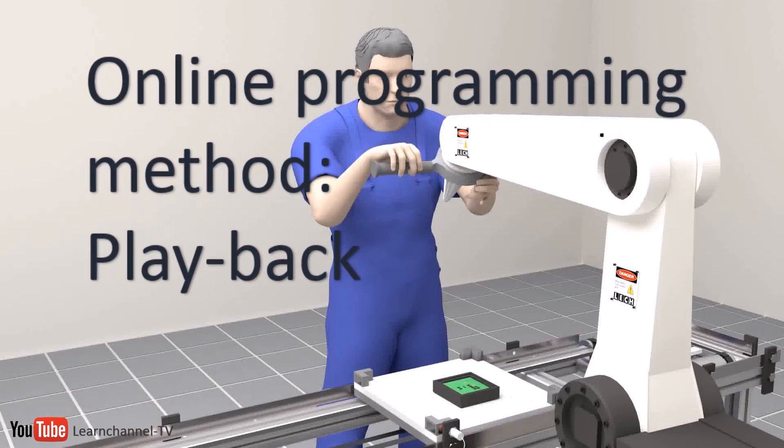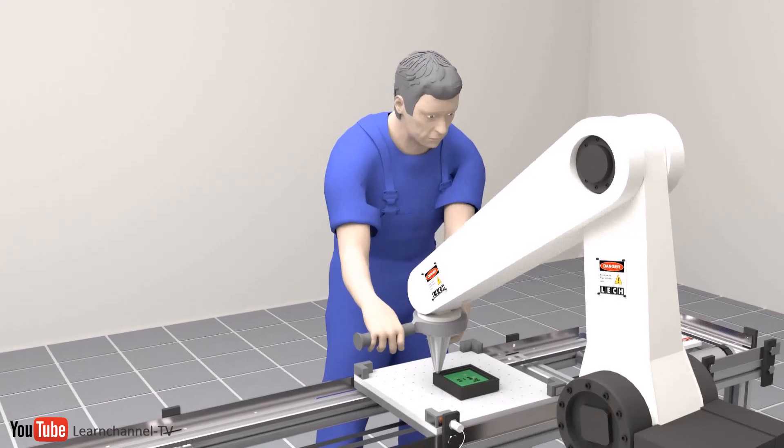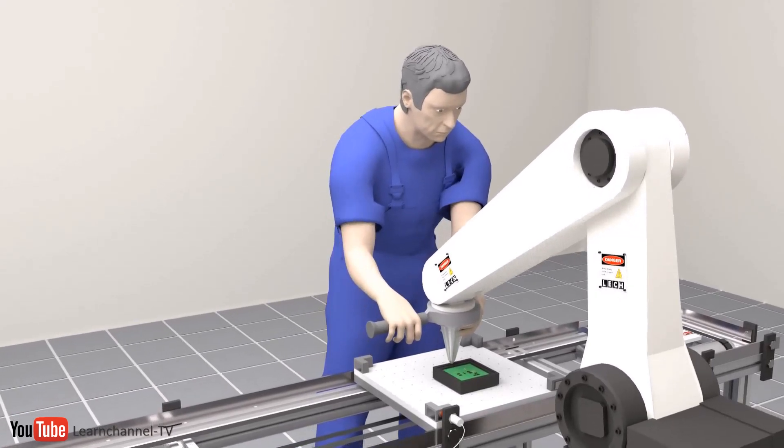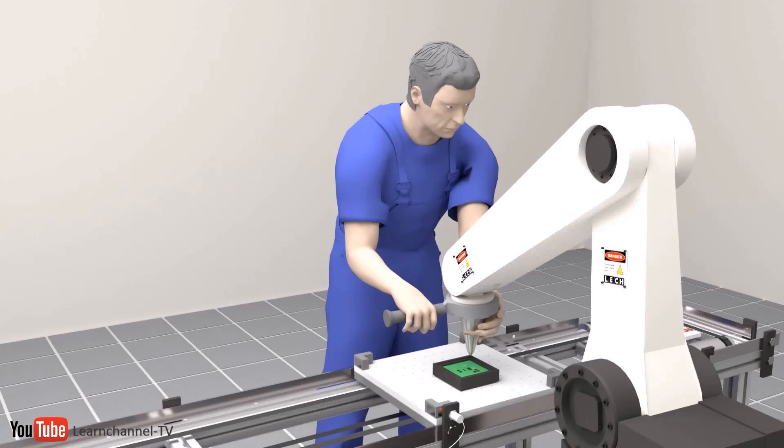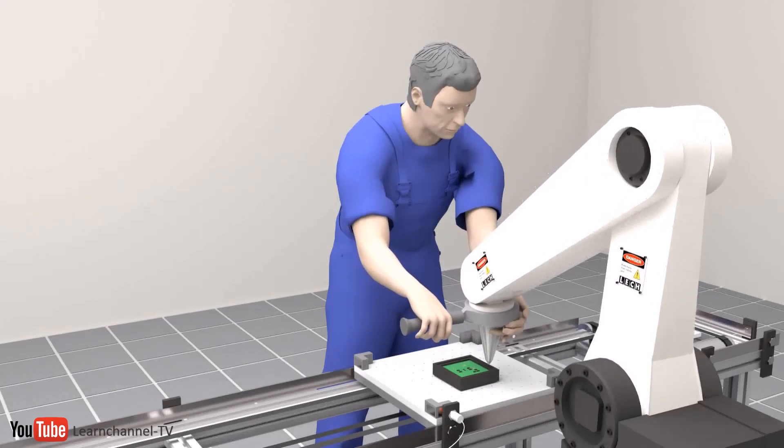Let's have a look at how this robot is programmed by the playback method, also called lead-through, which is typically associated with continuous path control. The programmer leads the robot manually within the desired path regarding the orientation of the robot hand.